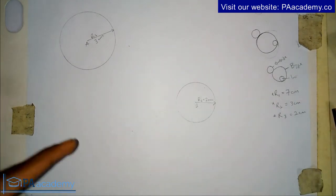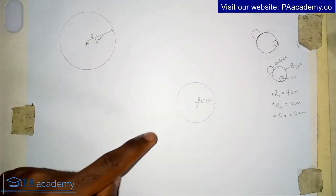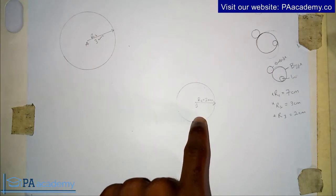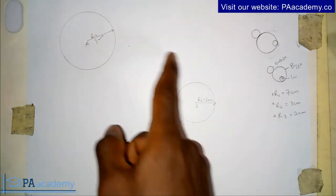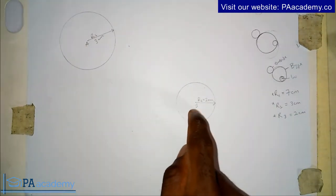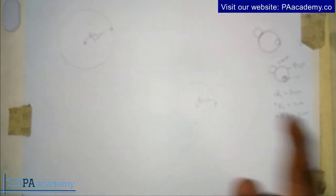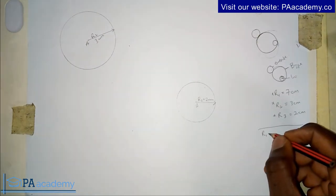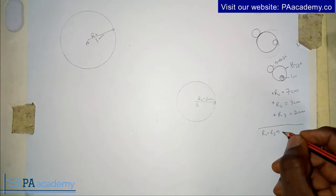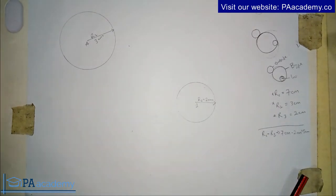The next thing we want to do is find the center of the bigger circle we are going to draw, so that one smaller circle will be inside and one will be outside, while it touches both. Starting with point B — since R1 is seven centimeters and R3 is two centimeters — we subtract: R1 minus R3 equals seven minus two, which gives us five centimeters.